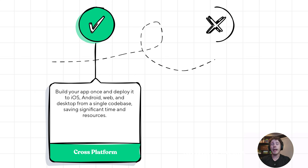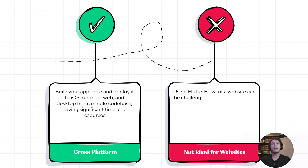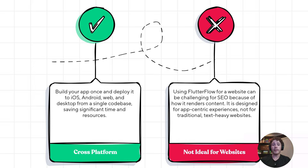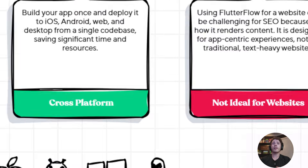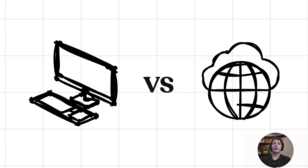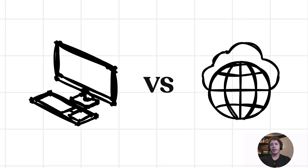Just because it can do everything doesn't necessarily mean it's best to do everything. For example, Flutter Flow is not really meant for designing websites, because the underlying programming language, Flutter, renders things on the client side, not the server side. This makes it difficult for search engines to crawl and scrape the website, because everything is rendered on a blank canvas and then displayed accordingly.